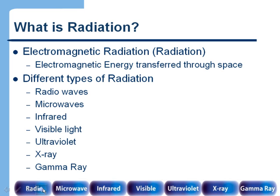All of these things you've probably heard of, but you may not have realized that X-rays and radio waves and visible light are all basically just different types of electromagnetic energy. The only thing that makes them different is how much energy these different types of radiation can carry. Gamma rays are the highest energy, and radio waves are the lowest energy.